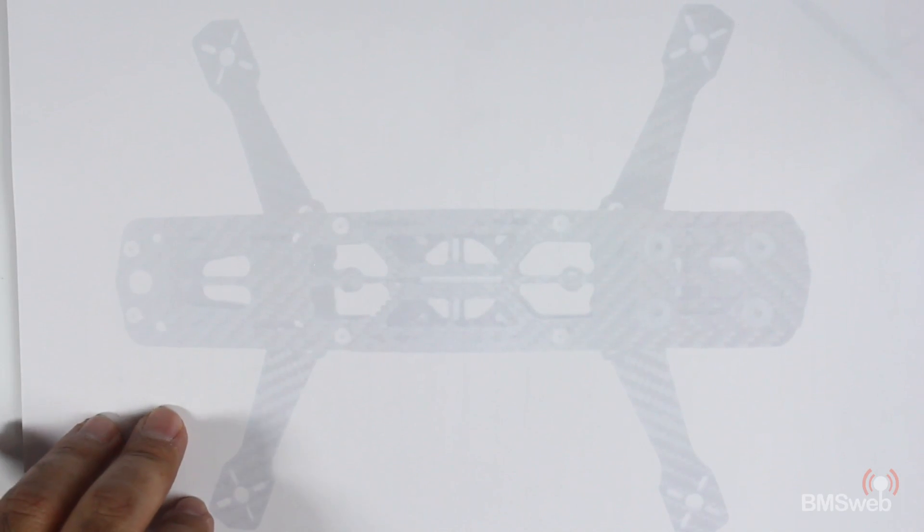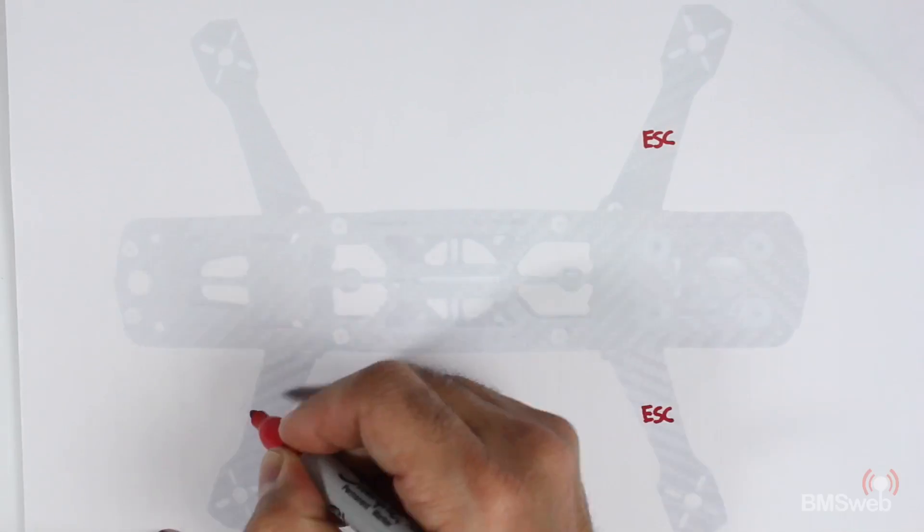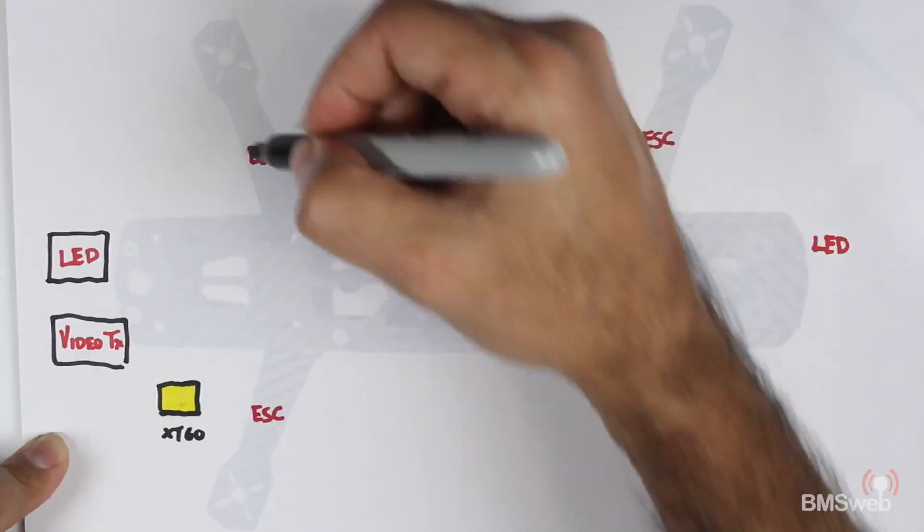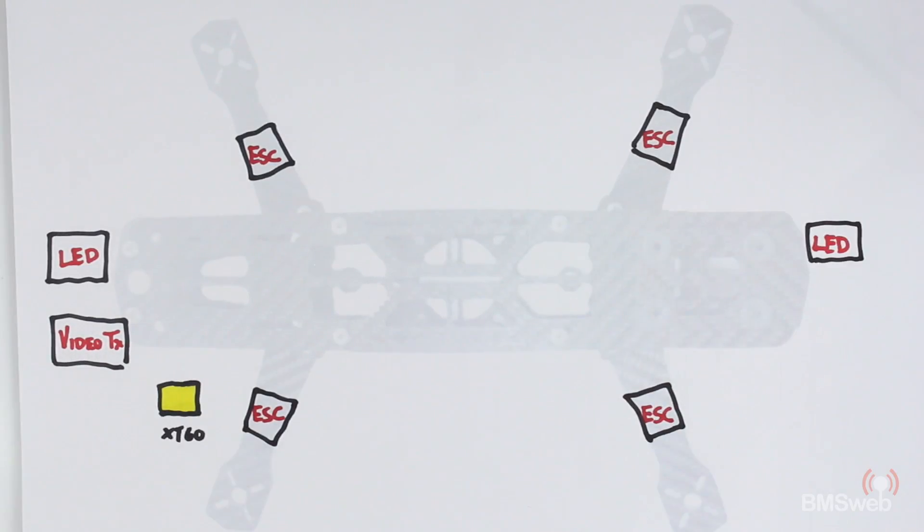The first thing I want to do is a really quick diagram. Now I'm going to draw up exactly how I've gone about wiring these. First thing I'll do is draw up where the ESCs are—I'll do the positives first.